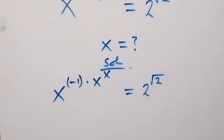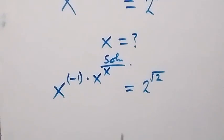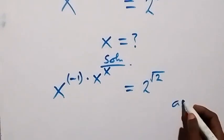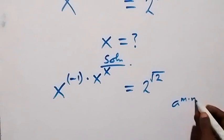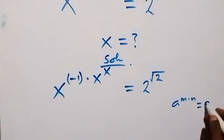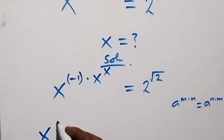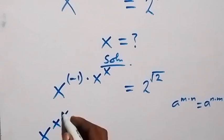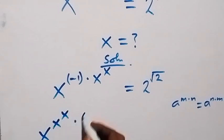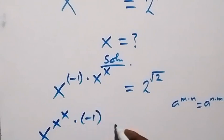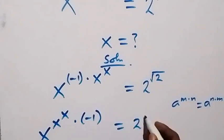This is the same as writing when we have a raised to power n times n, we equalize it as a raised to power n times n. So here this multiplies and we can interchange it and say this is x raised to power x, raised to power x, n times, then minus 1, equals 2 raised to power root 2.